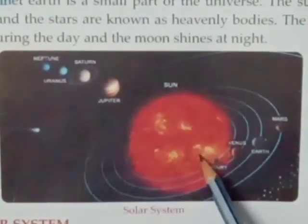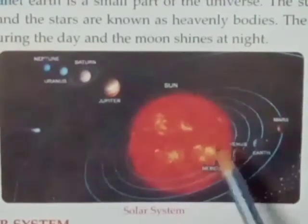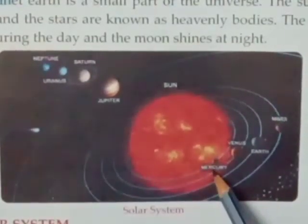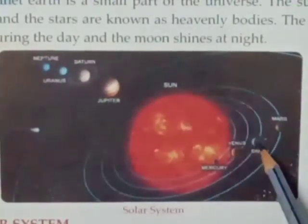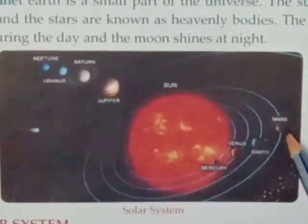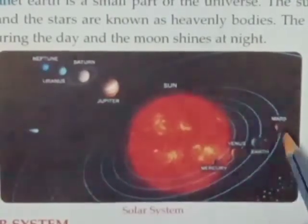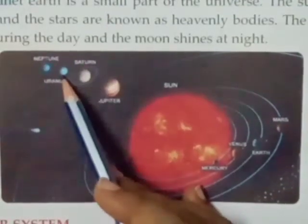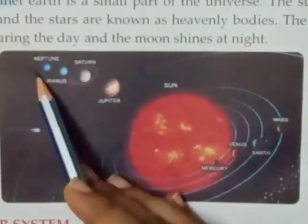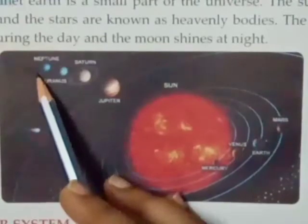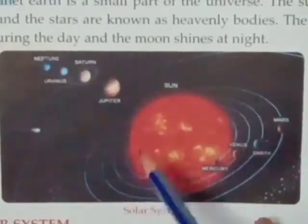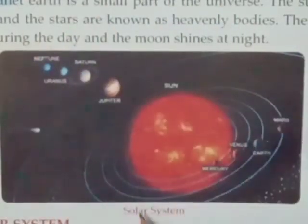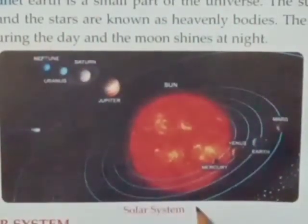Dekho, koon-koon se planets hoote hai — yeh to sun ho gya. Phir, usse sabse nazdik hoota hai Mercury, bhoat chhota sa planet hai. Then aata hai Venus. Phir hamaari Earth. Uske baad Mars, yani mangal. Phir aaya Jupiter. Then Saturn. Phir Uranus. Aur phir aata hai Neptune. Toh yeh eight planets hai joh sun ke aaspaas ghoomtay rehte hai. And they all together make our solar system.